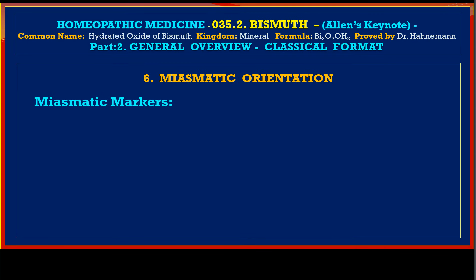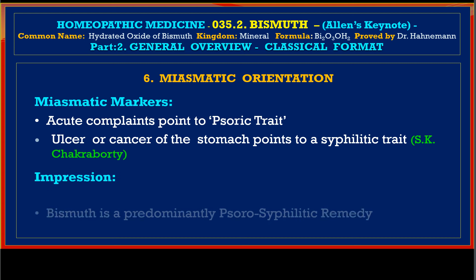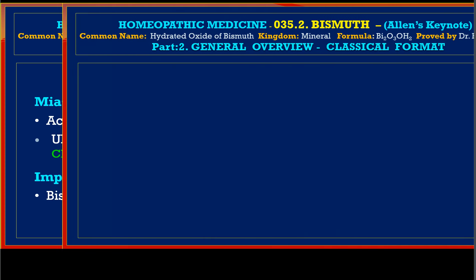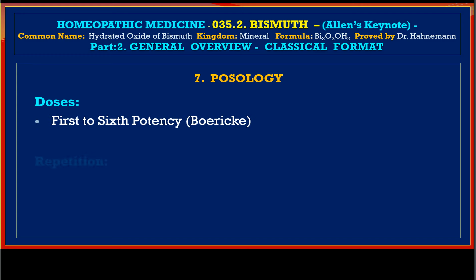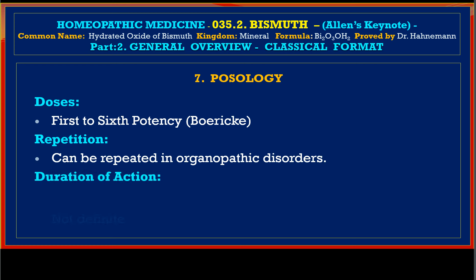Miasmatic orientation: acute complaints point to the psoric trait; ulcer or cancer of stomach points to the syphilitic trait. The impression is that Bismuth is a predominantly psoro-syphilitic remedy. Posology: first to sixth potency is suggested by Boericke; repetition can be done in organopathic disorders; duration of action has no definite clue.